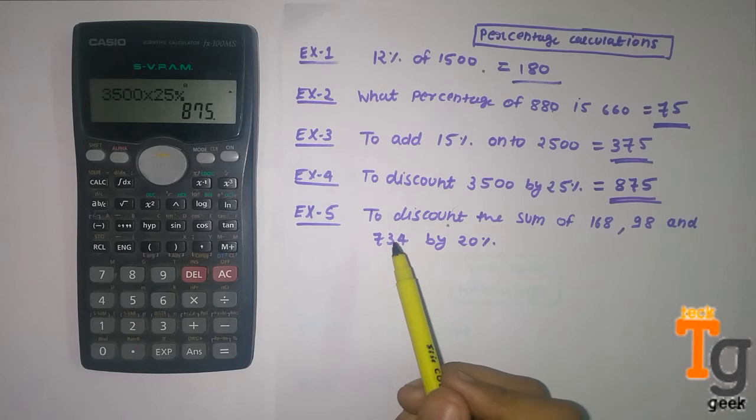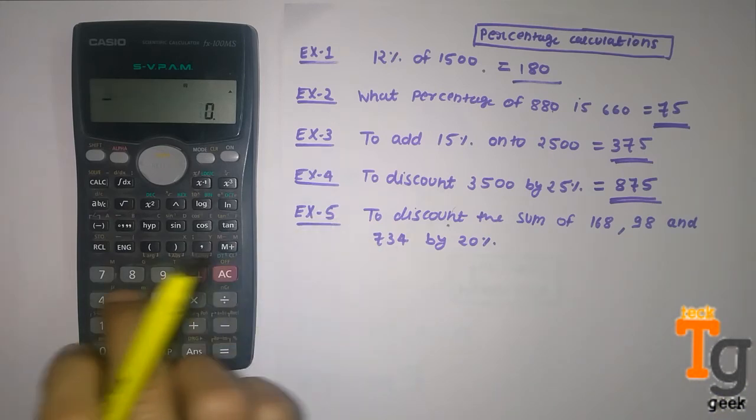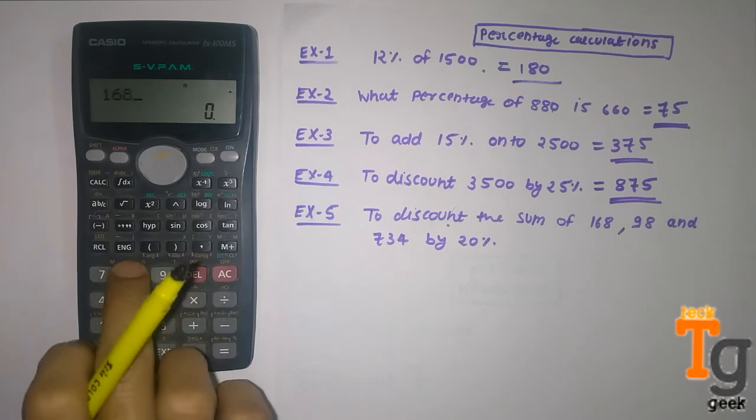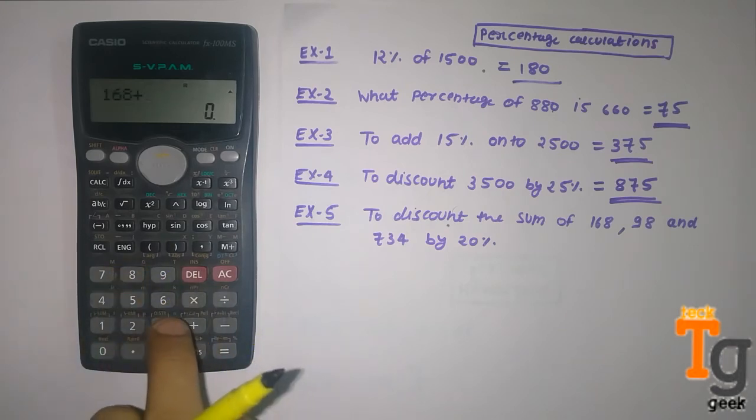And question 5 is to discount the sum of 168, 98 and 734 by 20%. So what we have to do: first of all we have to add all the numbers. So 168 plus 98 plus 734. It is 1000.